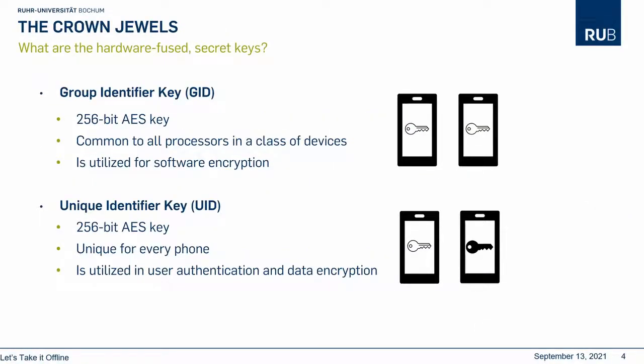Let's take a closer look at what hardware-fused secret keys are stored on the iPhone 4 and what we could try to extract. The two main relevant keys are the so-called group identifier key, the GID, and the user identifier key, the UID, which are both 256-bit keys for the AES engine. The GID key is the same for all processors in the class of devices and is used for software encryption of the system. The UID key, on the other hand, is unique for every device and is used for user authentication and for encrypting and decrypting data.